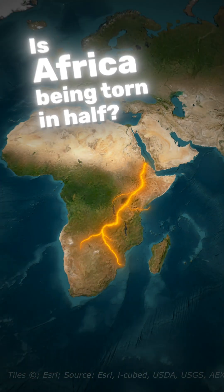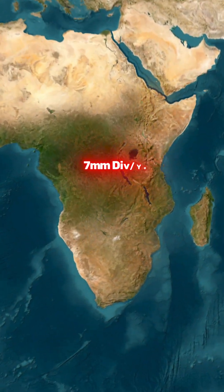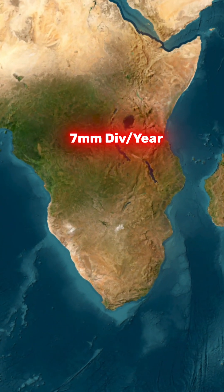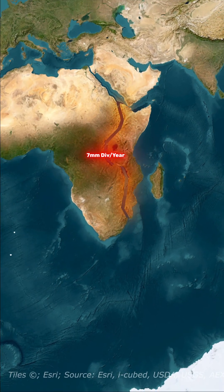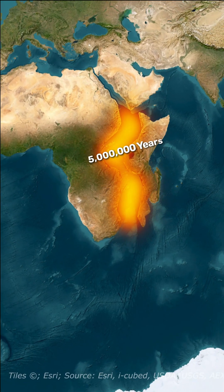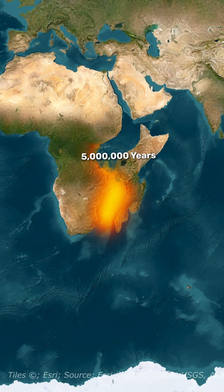Is Africa being torn in half? At the current rate of seven millimeters of divergence per year, geologists estimate Africa may split in the next five million years and form a new ocean due to seawater flooding.